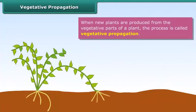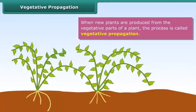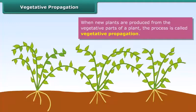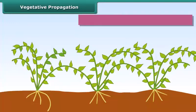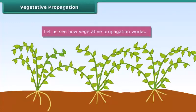When new plants are produced from the vegetative parts of a plant, the process is called vegetative propagation. It does not involve the formation of seeds. Let us see how vegetative propagation works.